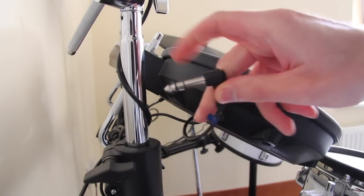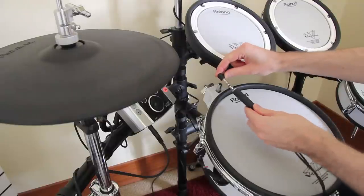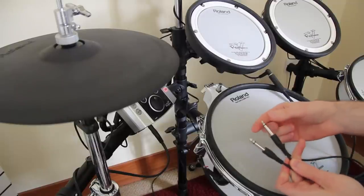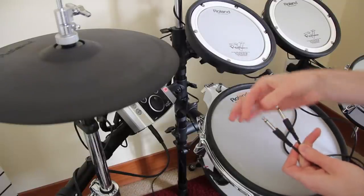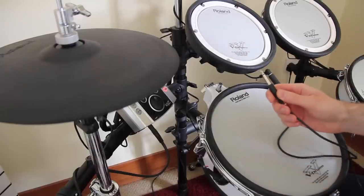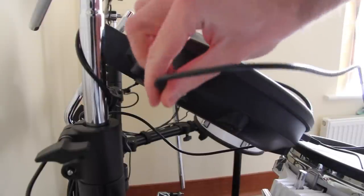Disconnect the cable from the tom pad and connect it with the splitter cable. Find out which one of the cable ends is the head and rim signal by simply touching the pads. Connect the head cable to the tom pad and the rim cable to your extra pad.